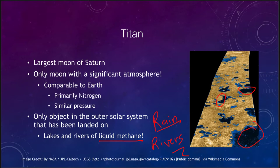Titan is the only object in the solar system other than the Earth that has this kind of liquid cycle — you can get lakes and rivers, and also methane rain. Titan may have a methane cycle much like the Earth has a water cycle, where water evaporates and then rains back out. Titan does the same kind of thing with methane.